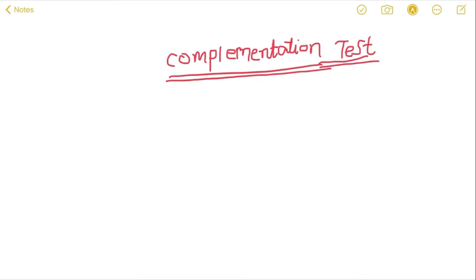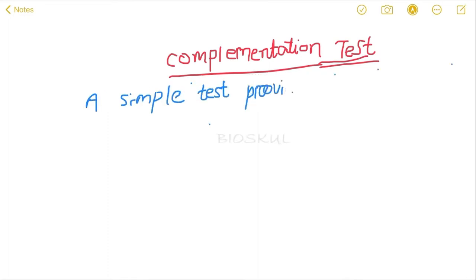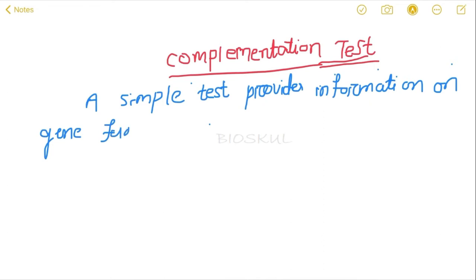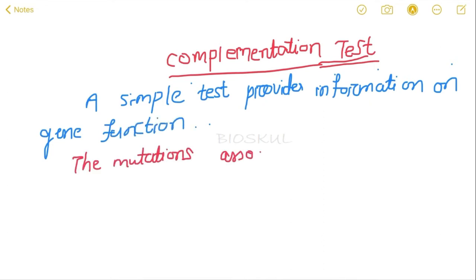Hey everyone, welcome to Bio School. Today we are going to discuss one of the most important topics from genetics: the complementation test. This is very important, please watch the video till the end. The complementation test is a simple test that provides information on gene function, or you can say that it tells whether mutations associated with a phenotype are in the same or in different genes.